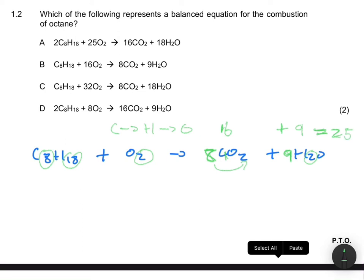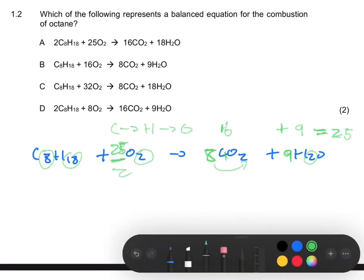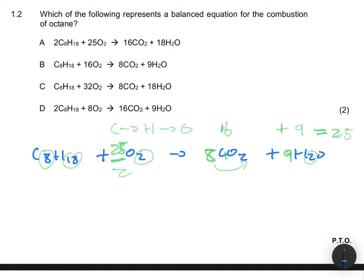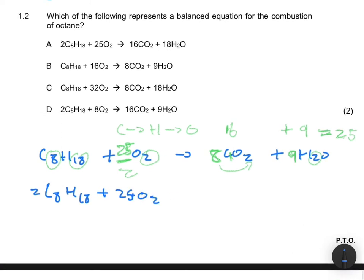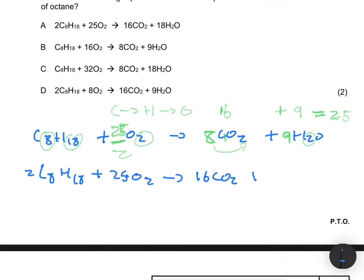On the left side we have 2 oxygens, and on the right we need 25. We could put 25/2 as a coefficient, but we can't have fractions in a chemical equation. So we multiply everything by 2, giving us: 2C₈H₁₈ + 25O₂ → 16CO₂ + 18H₂O. Now we have the balanced equation for the combustion reaction.